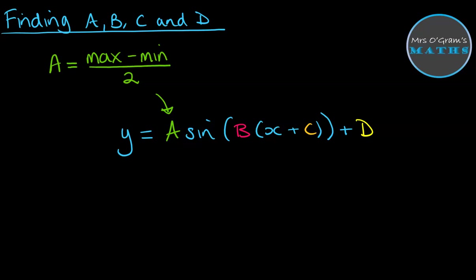So a quick recap, A was the amplitude. To get that we will take the maximum value that we can see on our graph, subtract the minimum value and then divide it by 2, and that tells us how much our graph has been stretched vertically.